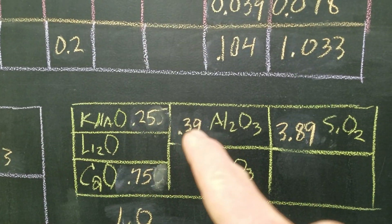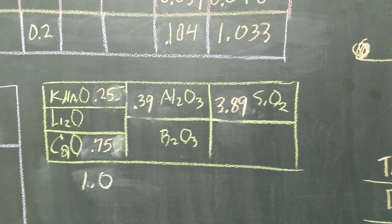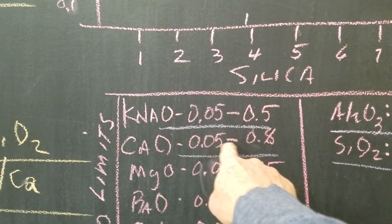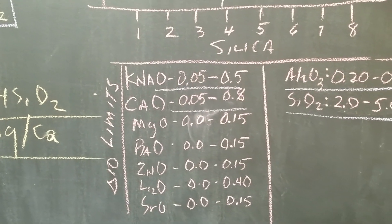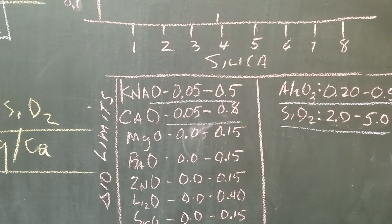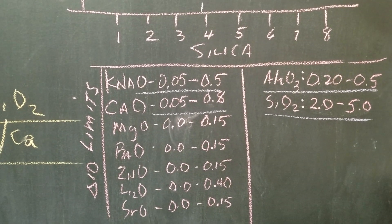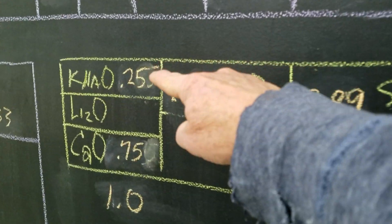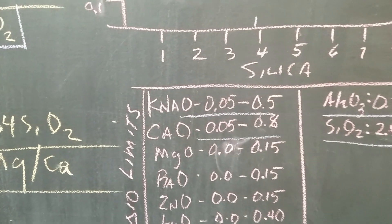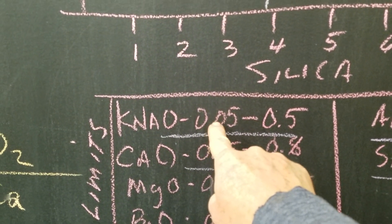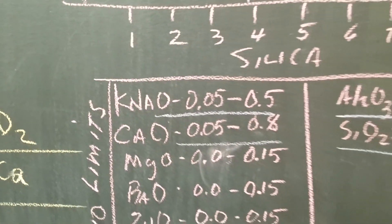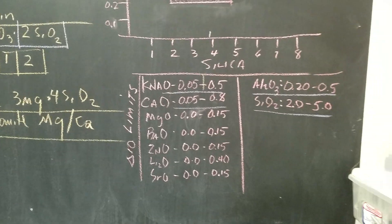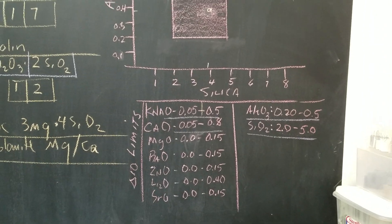Now let's check the other oxide limits. Calcium is 0.75 — the high end is 0.8, so we're fine; going over 0.8 might cause running or rivulets. Potassium/sodium is 0.25 — the range goes from about 0.05 to 0.5, so we're right in the middle. That's a good amount of potassium and sodium for this glaze.